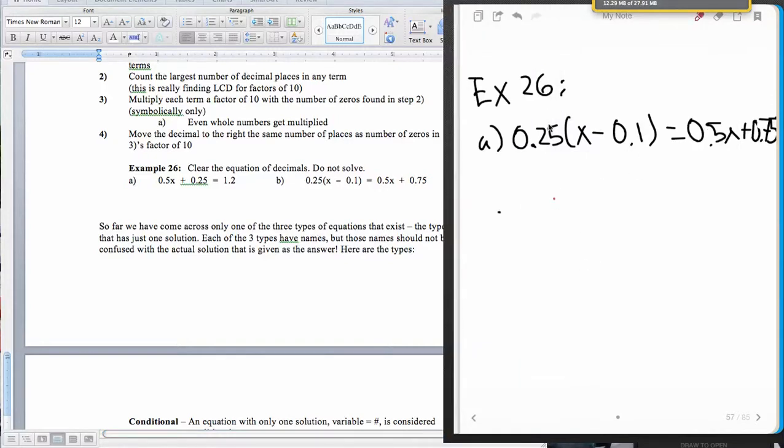So our first step here is to do the distributive property. Now, this can be nasty because multiplying decimals isn't always fun. When I give you examples of this though, I'm going to make it easy on you. So 0.25 times x is giving me 0.25x, and then plus a negative.